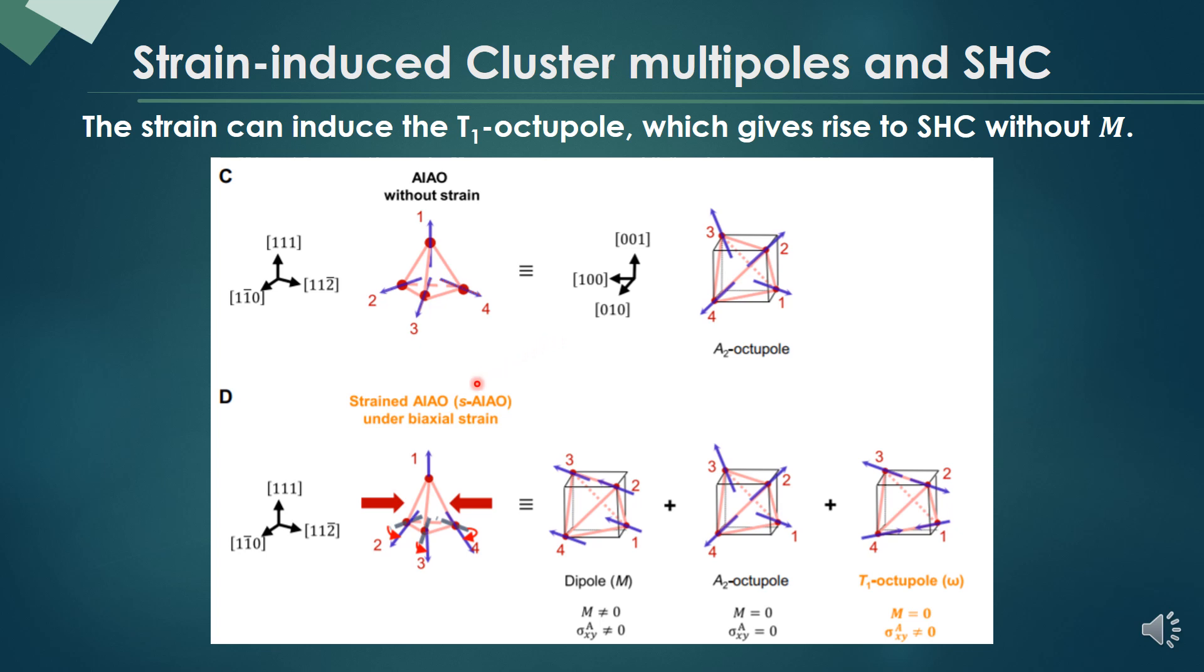In fact, when we apply the strain to all-in-all-out ordering, the spin can tilt from all-in-all-out. Therefore, the T1 octupole can rise.